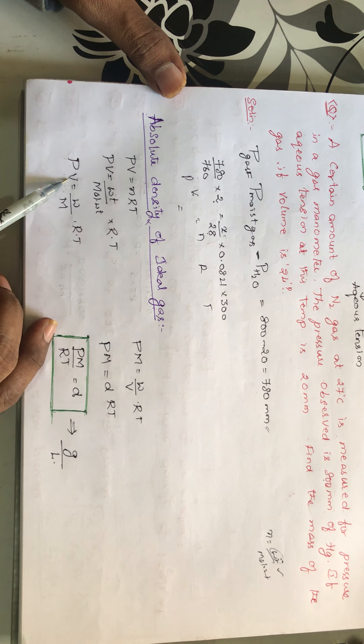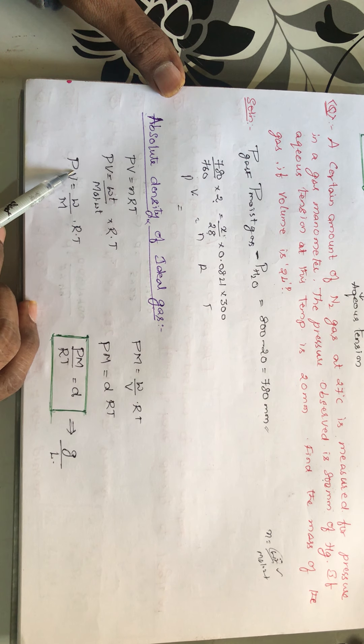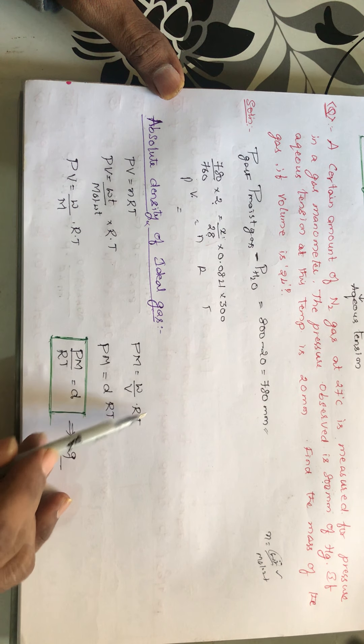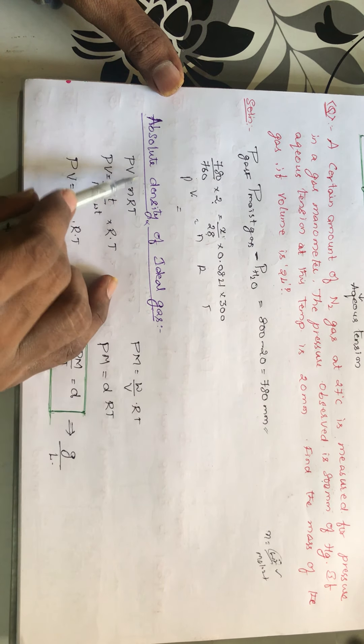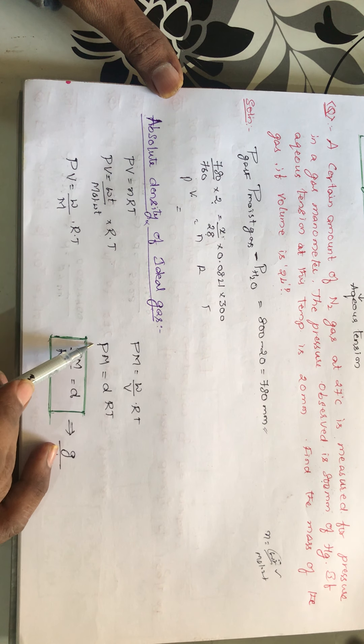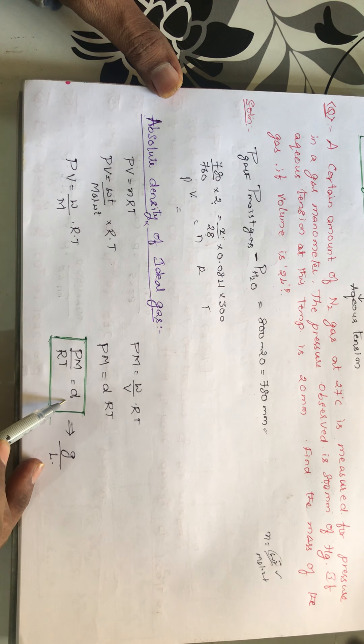You send this V to the other side and this M there. So if M goes this side, it multiplies so that PM. If V comes this side, what happens? W by V into RT. Because I want density. So weight by volume is nothing but density into RT. It equals PM. And density equals PM by RT.